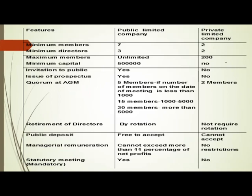Quorum at AGM — AGM means Annual General Meeting. For a private limited company, two members are needed for a quorum at the annual general meeting. In the case of a public company, if the number of members present at the meeting is less than 1,000, then quorum should be five members; if it is between 1,000 to 5,000, then 15 members should be there; if it is more than 5,000, then 30 members should be there.